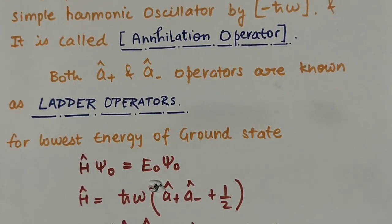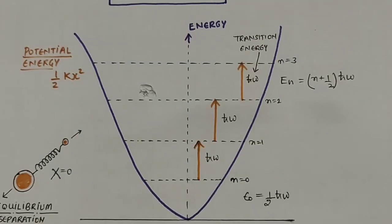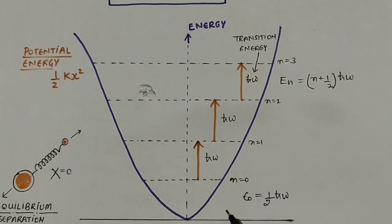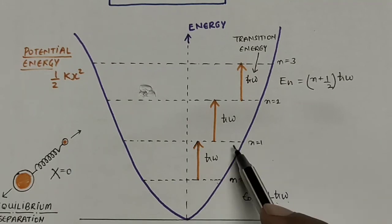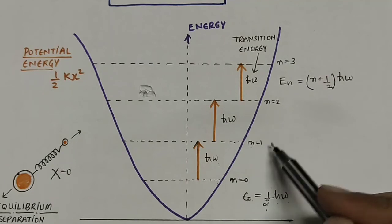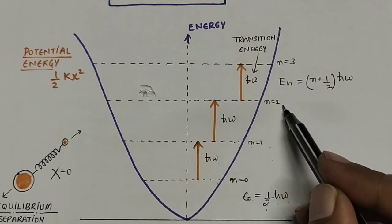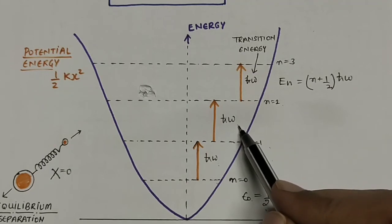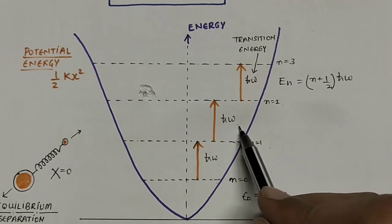Both a+ and a− are known as ladder operators. From the energy level graph, we see that a+ and a− are called ladder operators because they increase or decrease the energy by ħω in discrete steps — from n=1 to n=2, for example, there is an increase of ½ħω. So a+ is the creation operator and a− is the annihilation operator, and both are referred to as ladder operators.